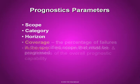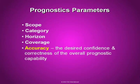Finally, the accuracy is the desired confidence and correctness of the overall prognostic capability, typically defined as a percentage. In some requirement statements, accuracy is bundled together with coverage as a single percentage of failures prognosed parameter.